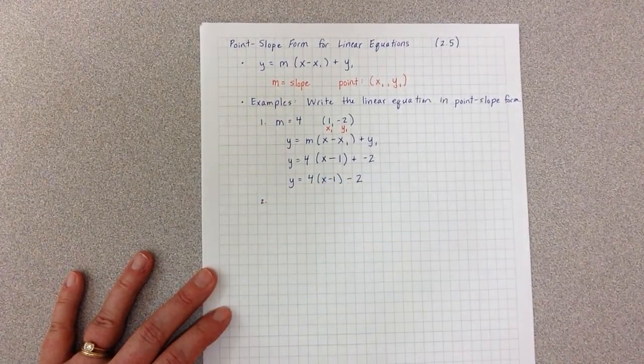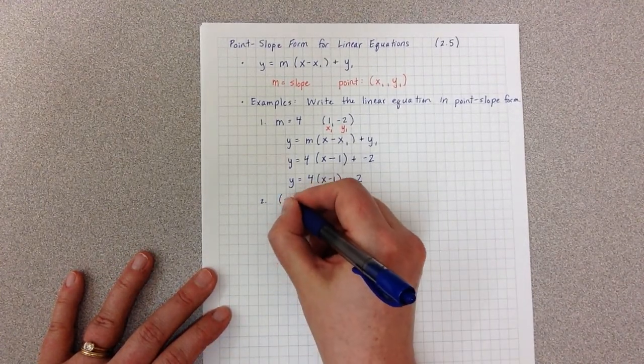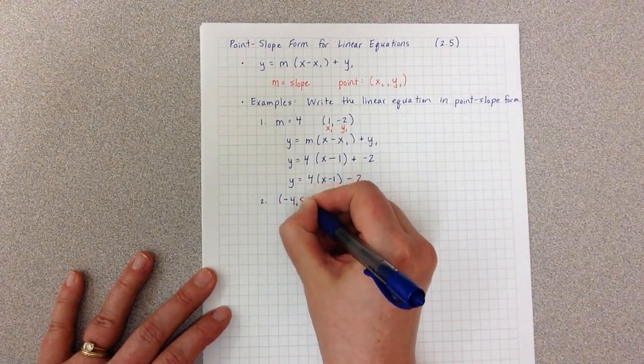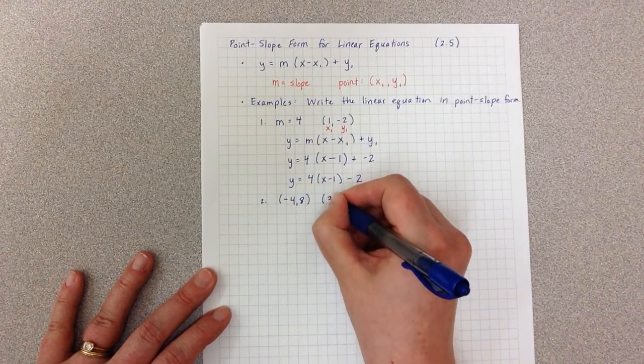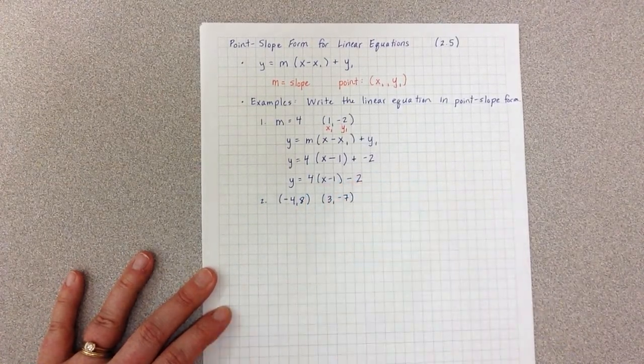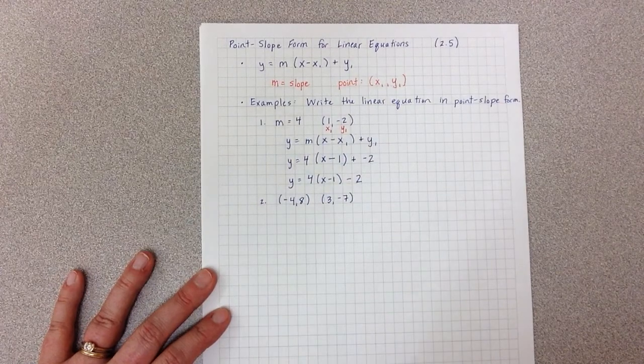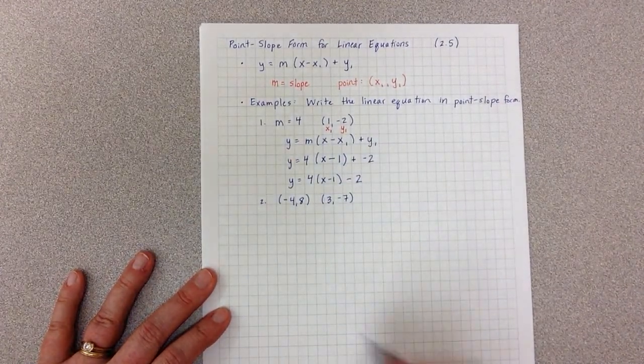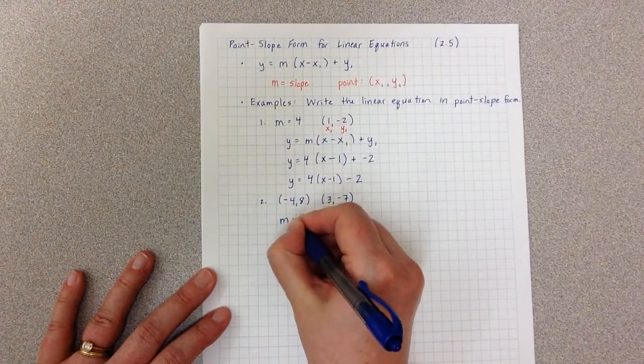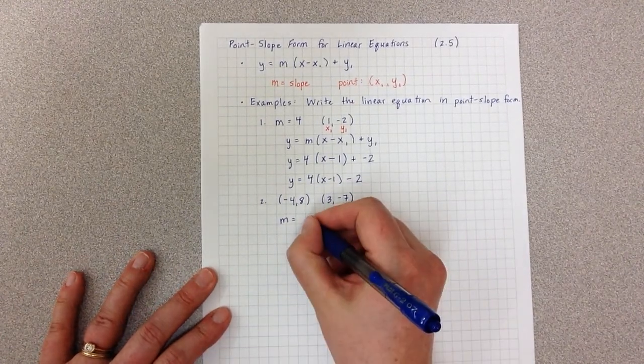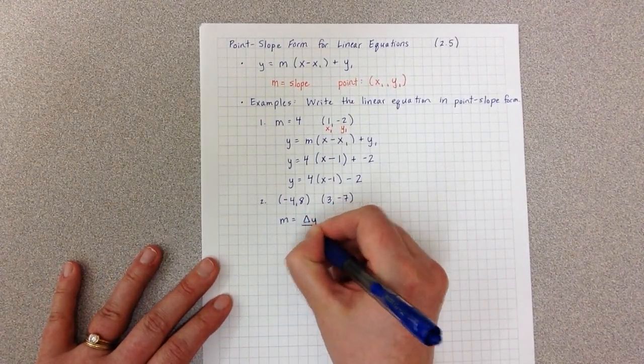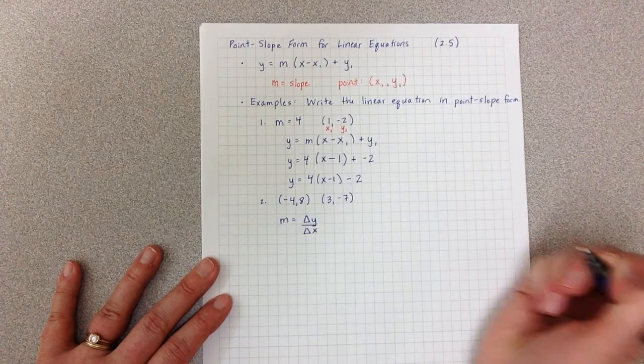Number 2. In number 2, we are given 2 points: negative 4 comma 8 and 3 comma negative 7. So in this case I have 2 points, so I need a slope. So we have to go back and say, we know that slope is when we have our change in y over change in x.